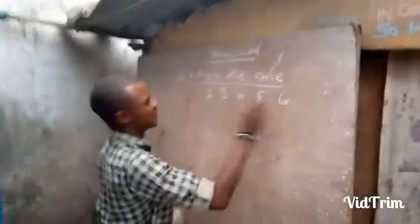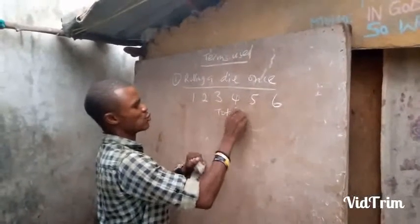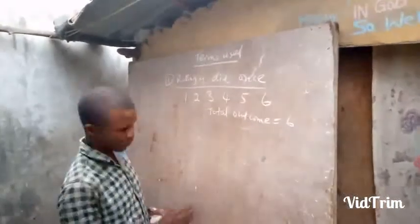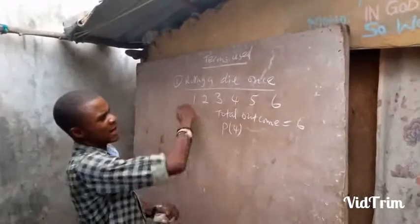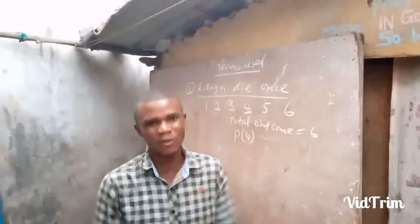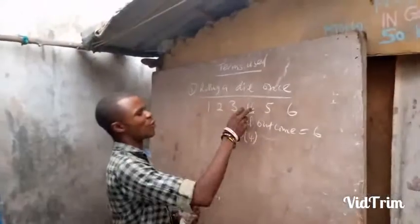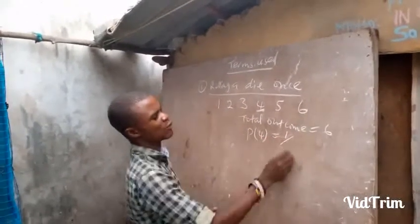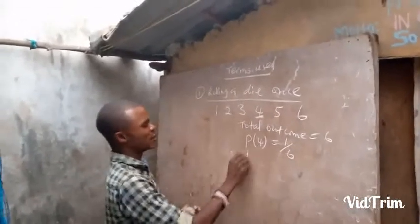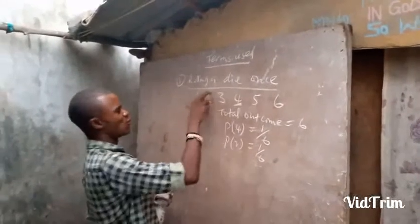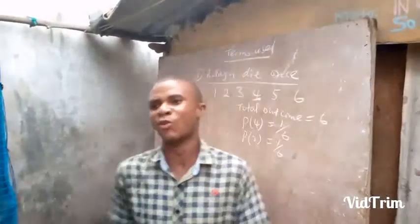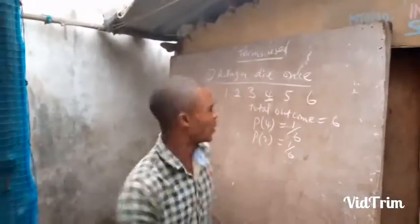If somebody says find the probability of four: four only occurs once among the six outcomes. So the probability of four is 1 divided by 6. Similarly, the probability of two is 1 over 6. The probability of any one number occurring is 1 divided by 6.